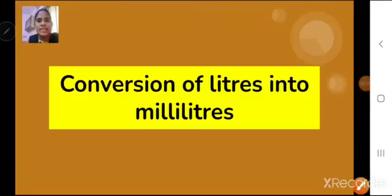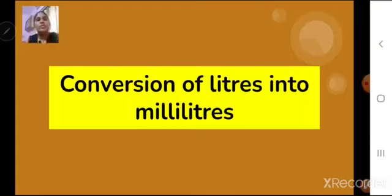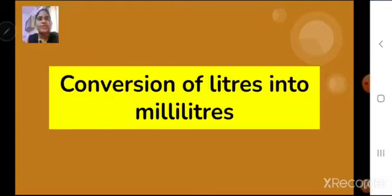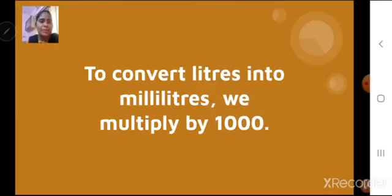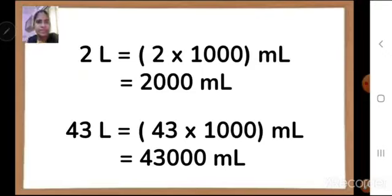Now let us understand conversion of liters into milliliters. If we need to convert from a bigger unit to a smaller unit, we multiply by 1000. Here also, if we need to convert from liters into milliliters, we have to multiply by 1000. For example, 2 liters: 2 × 1000 = 2000 milliliters.